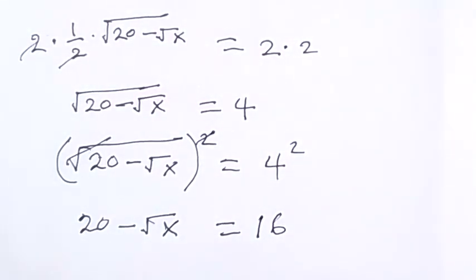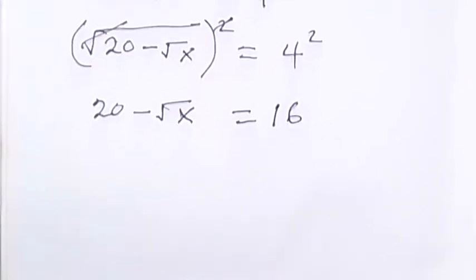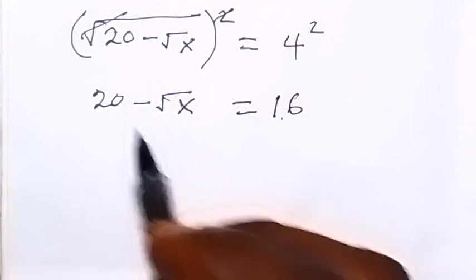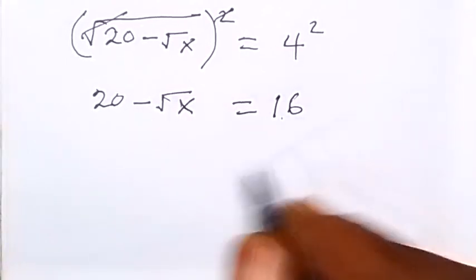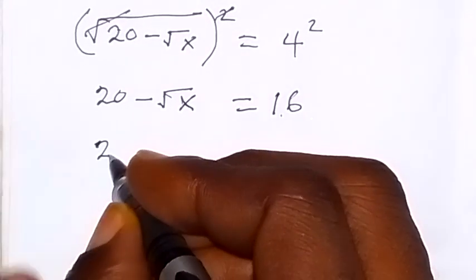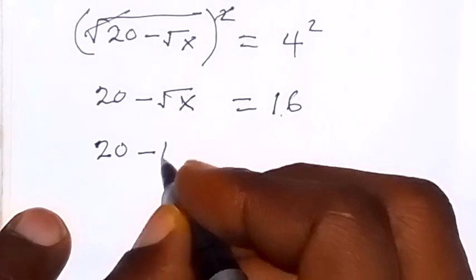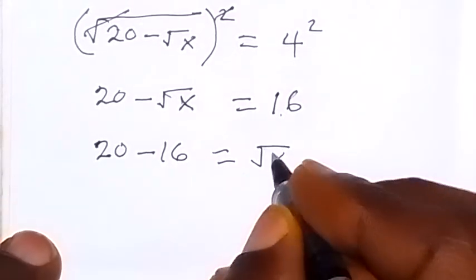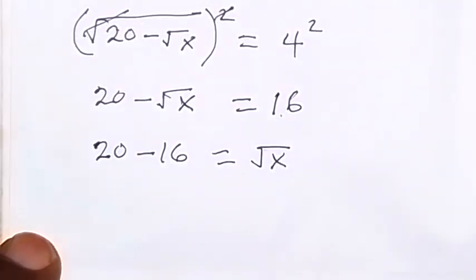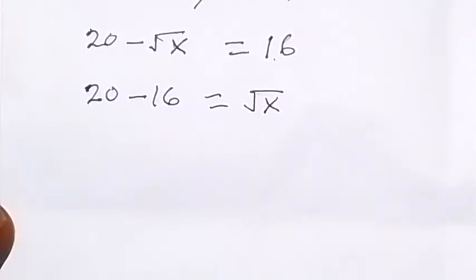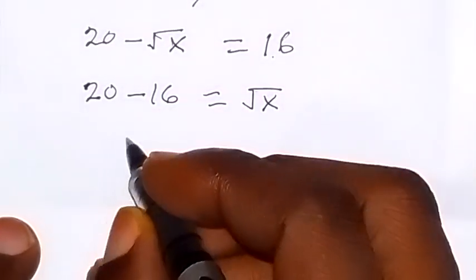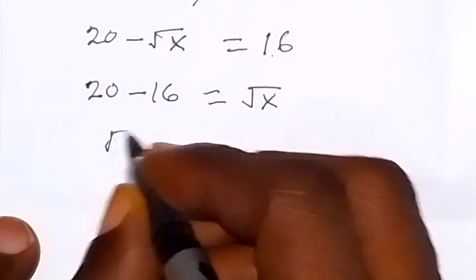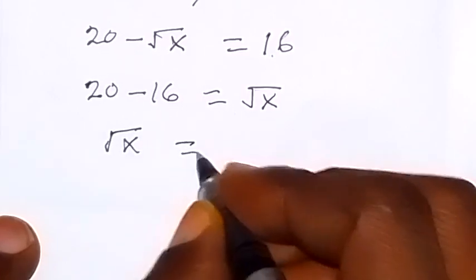Let's rearrange: take 16 to this side, so we have 20 minus 16 equals root x. And 20 minus 16 is 4, so 4 equals root x. We can equally say that root x equals 4.